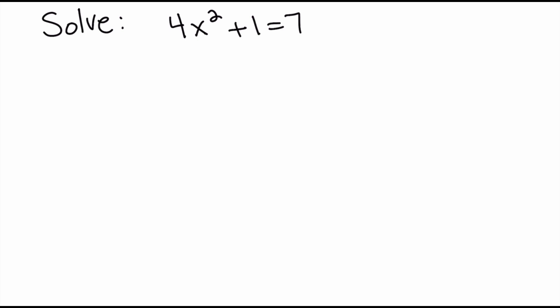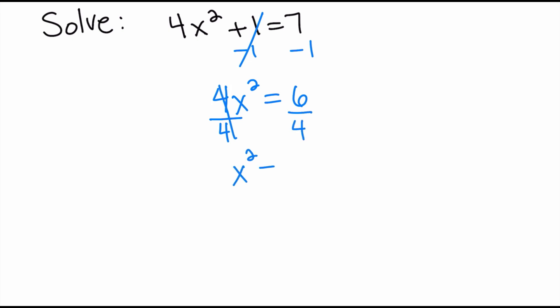Let's look at another example. In this case we have 4x squared plus 1 equals 7. Unlike the previous problem, we don't have the quadratic term isolated. So the first thing we're going to have to do is subtract 1 from both sides. We get 4x squared is equal to 6. To isolate x squared we're going to divide both sides by 4, giving us x squared is equal to 6 over 4.